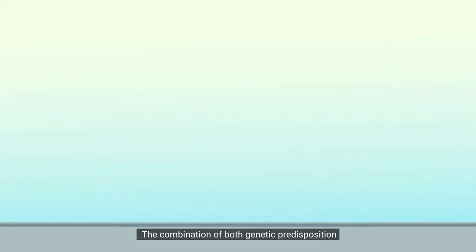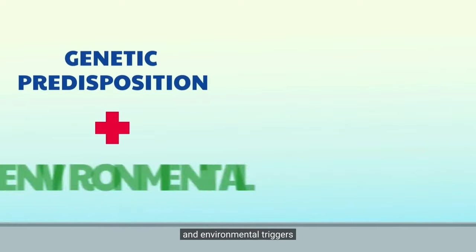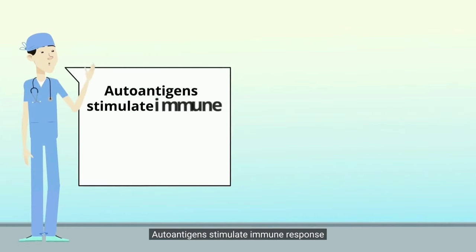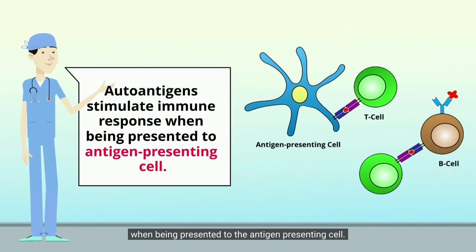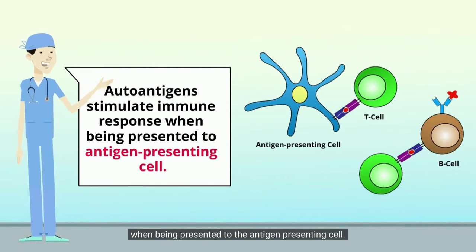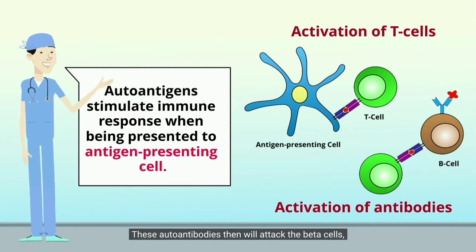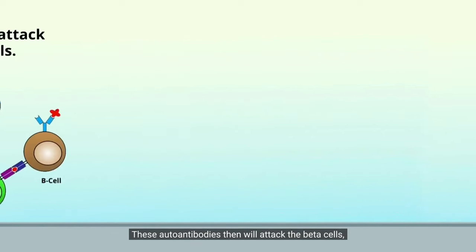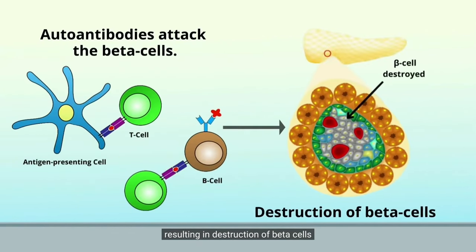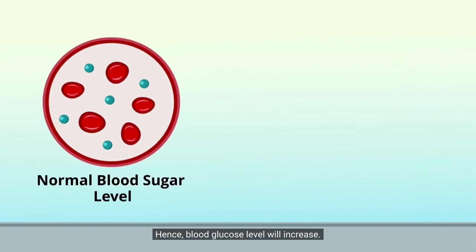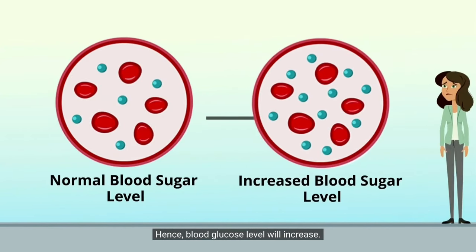The combination of both genetic predisposition and environmental triggers will cause the formation of autoantigens on the beta cell. Autoantigens stimulate an immune response when being presented to the antigen-presenting cell. This leads to the activation of T-cells and antibodies. These autoantibodies then will attack the beta cells, resulting in destruction of beta cells with decreased insulin secretion. Hence, blood glucose level will increase.